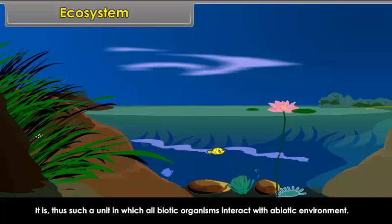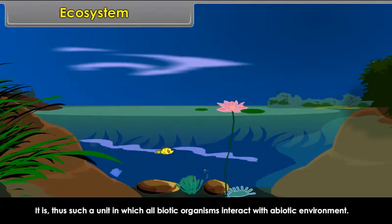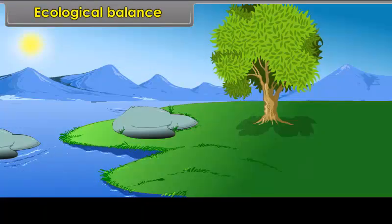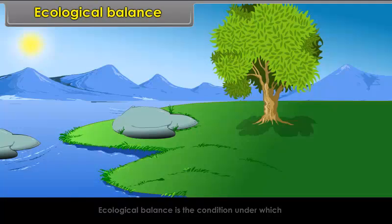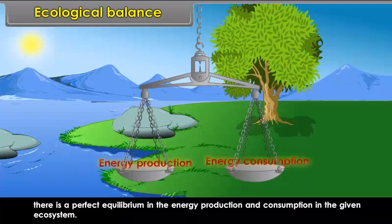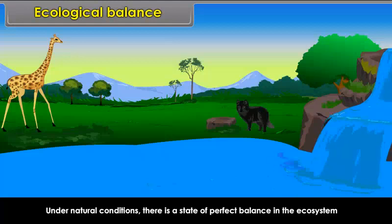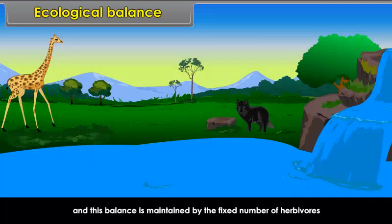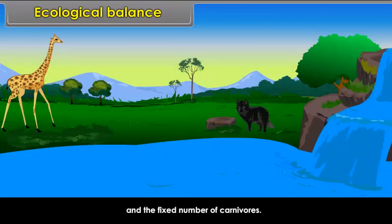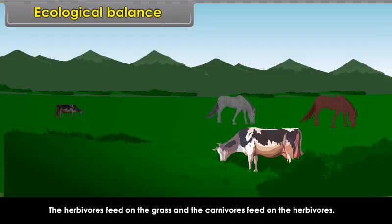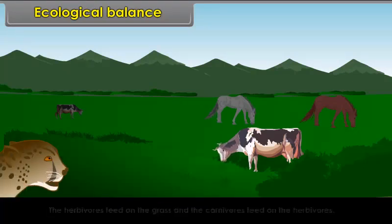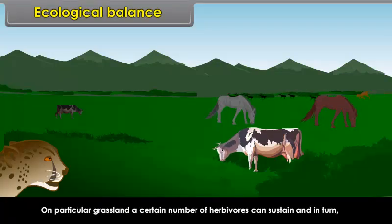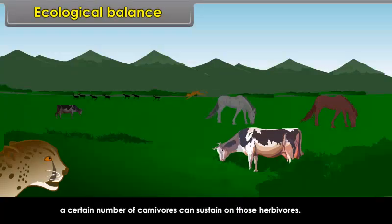Ecological balance. Ecological balance is the condition under which there is a perfect equilibrium in energy production and consumption in a given ecosystem. Under natural conditions, there is a state of perfect balance in the ecosystem, maintained by a fixed number of herbivores and a fixed number of carnivores. The herbivores feed on the grass and the carnivores feed on the herbivores. On a particular grassland, a certain number of herbivores can sustain, and in turn, a certain number of carnivores can sustain on those herbivores. Thus, in the state of ecological balance, the living organisms remain almost stable.